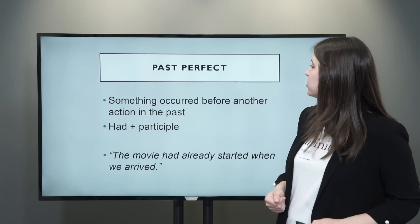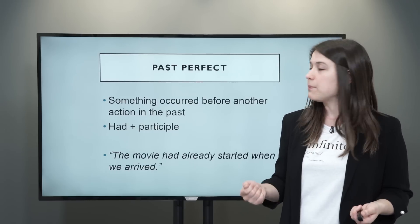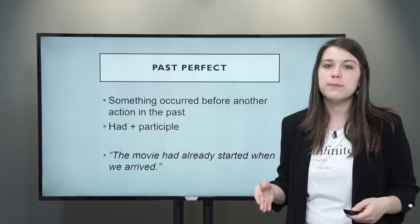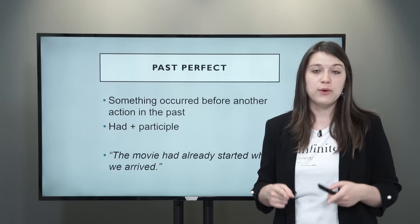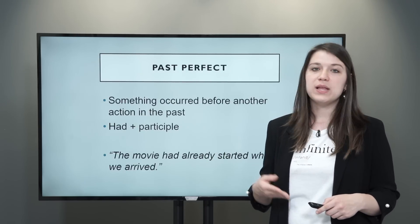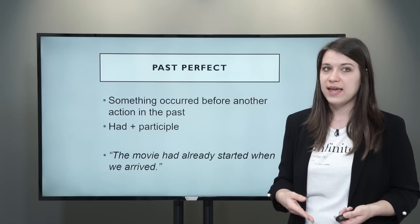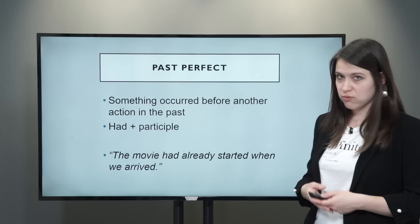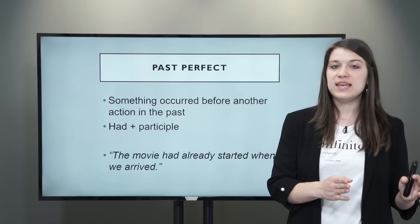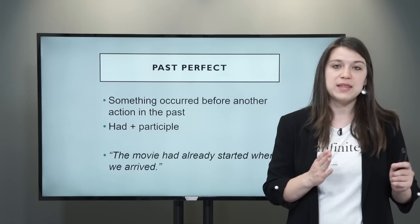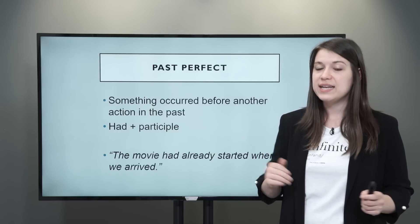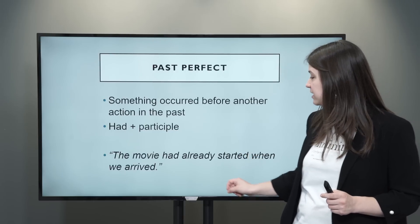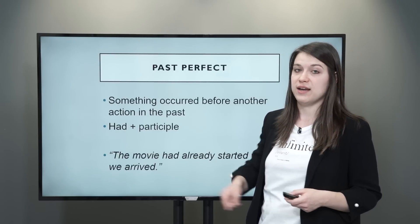Now let's look at the past perfect — this is something that occurred before another action in the past. We form the past perfect with the verb to have in the past simple, so had plus the participle. For example: The movie had already started when we arrived. If arrive is the verb in the past simple, the action that happened before it is in the past perfect — so had started — and this already to specify the time goes in the middle.